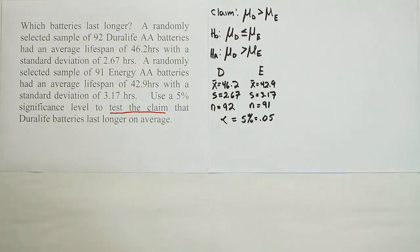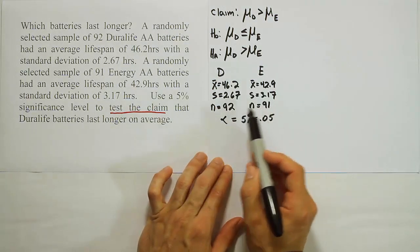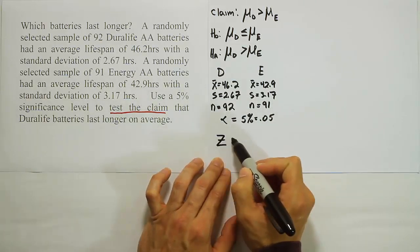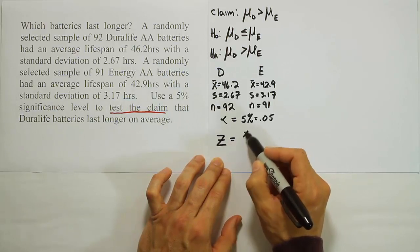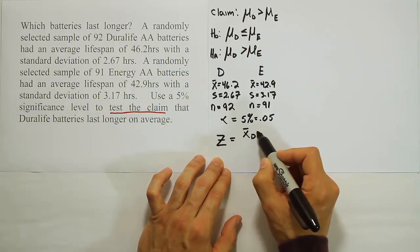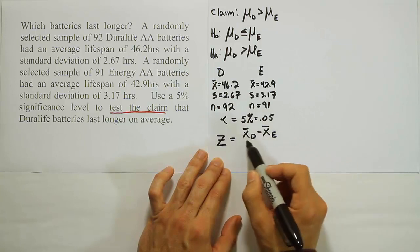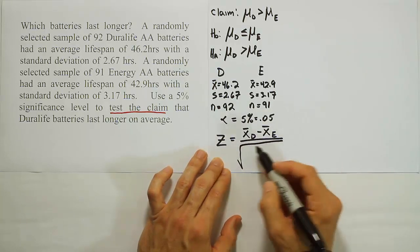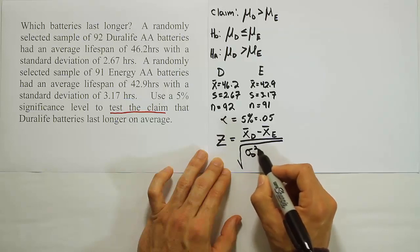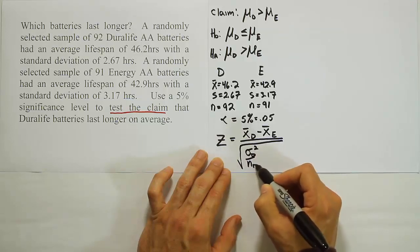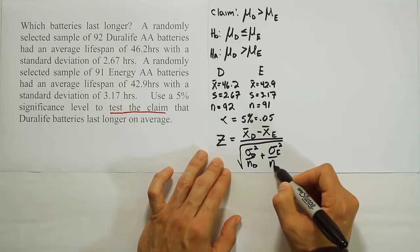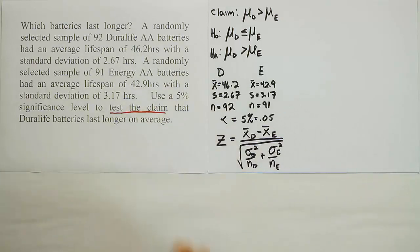Now once you have that information, you want to take that and plug it into a test statistic formula. The fact that the sample sizes are both large, 92 and 91, we can go ahead and use the Z formula for the test stat. So Z will be equal to x-bar for Duralife minus the x-bar for the energy battery divided by the square root of, and then we're going to do sigma for Duralife squared over its n value plus sigma for the energy battery squared over its n value. There's our formula.